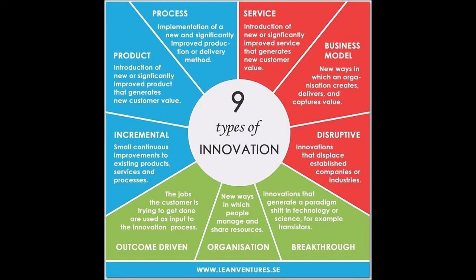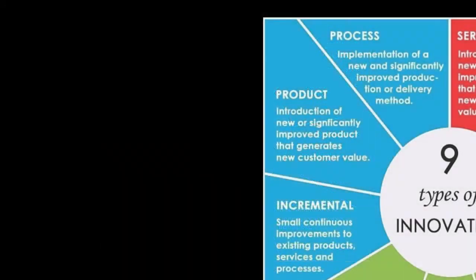It's published in quite a lot of places that we have nine different types of innovation. The most well-known is the product, but we can also change and invent the process and something about service. We can change the business model, and we can do this either in an incremental, small-step improvement process, or as a disruption or breakthrough — huge changes in a short time. People also often forget that we can innovate in the organization as well.